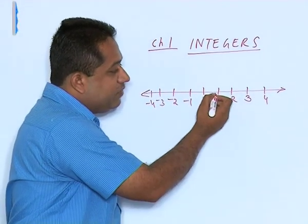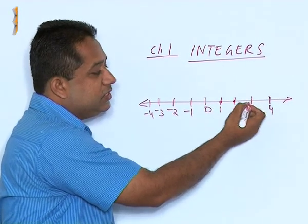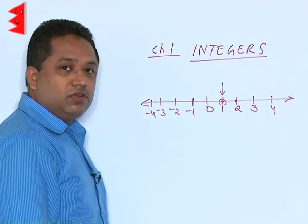Now on the number line we can represent 1, 2, these are all numbers. If I want to represent 1, I can just circle it and show that this is the position of 1.